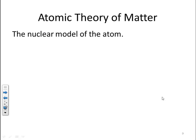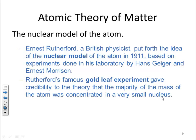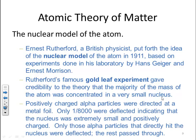The nuclear model of the atom as we see it today came from Ernest Rutherford, a British physicist, who put forth the idea of the nuclear model in 1911 based on experiments done in his laboratory by Hans Geiger and Ernest Marsden. Rutherford's famous gold foil experiment gave credibility to the theory that the majority of the mass of the atom was concentrated in a very small nucleus. Positively charged alpha particles were directed at the metal foil, and only one out of 8,000 were deflected, indicating that the nucleus was extremely small and positively charged.